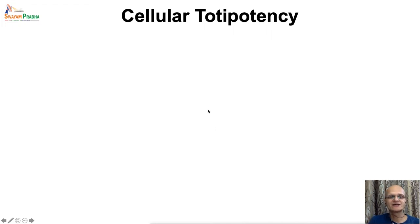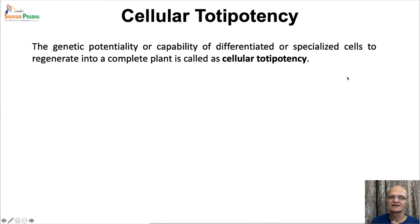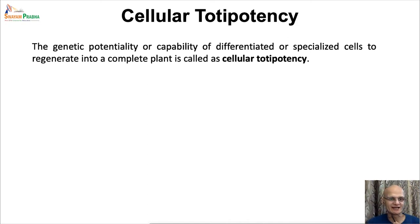As per the standard definition, cellular totipotency is the genetic potential or capability of differentiated or specialized cells to regenerate into a complete plant. In other words, it is a characteristic of plant cells where the potential of forming all tissues, organs, or organ types is retained even when these cells mature to differentiate into specialized forms to perform specialized functions. Therefore, theoretically, as long as a plant cell is alive, has an intact membrane system and a viable nucleus, it is capable of reverting back to a meristematic state and hence complete plants can be produced from these cells.